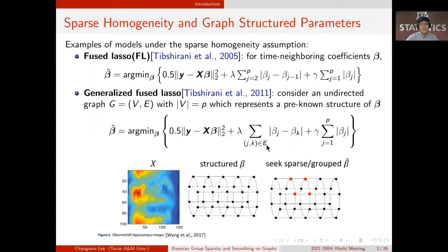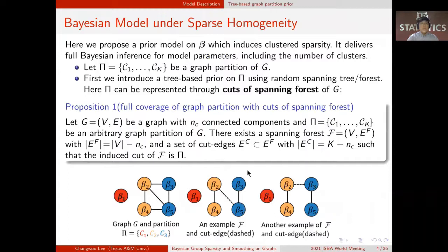The graph is flexible enough to represent almost any kind of data structure, including cylindrical space, as shown here. Now we introduce a new Bayesian model which addresses the sparse homogeneity assumption on a graph. It delivers full Bayesian inference, including the inference on the number of clusters. To do so,